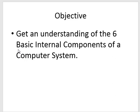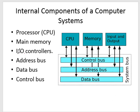Alright, so here they are. These are the internal components of a computer system. You've got six components: the processor or the CPU, the main memory, the input output controllers or the I/O controllers, the address bus, the data bus, and the control bus. Those six components you should be able to list them out and draw that diagram.